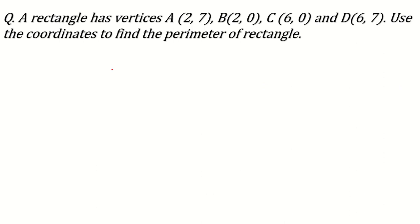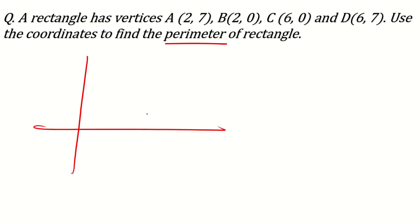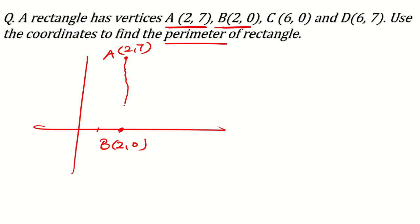A rectangle has four vertices given. Use the coordinates to find the perimeter of the rectangle. I will make a rough figure. Point A is (2,7), point B is (2,0) — so this gives a vertical line. Point C is (6,0) and point D is (6,7). It's a vertical line because value of x is same for A and B, and a horizontal line where y is the same.